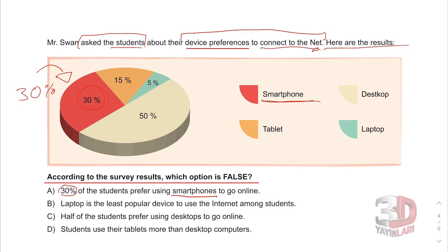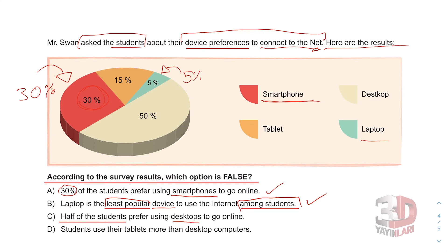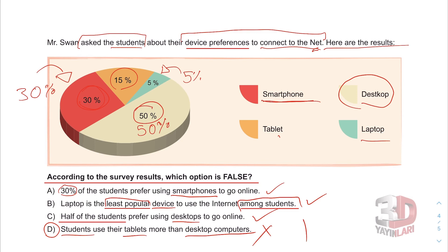Option B: Laptop is the least popular device to use the internet among students. Laptops are five percent — this is true, they are the least popular. Option C: Half of the students prefer using desktops to go online — fifty percent, that is half, true. Option D: Students use their tablets more than desktop computers. Tablets are only 15 percent whereas desktops are 50 percent — this is false. The answer is D.